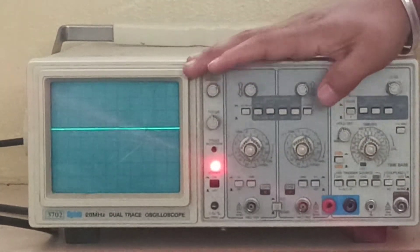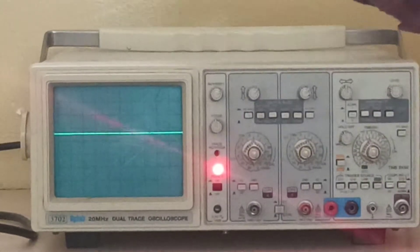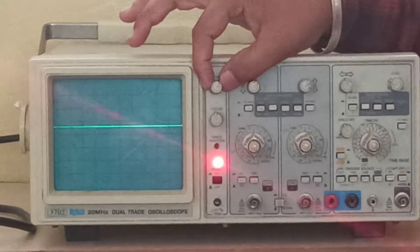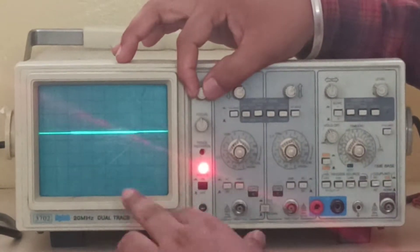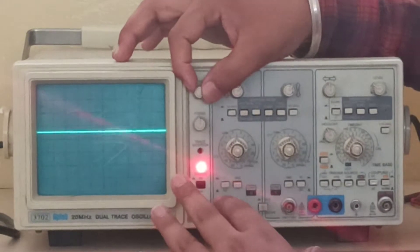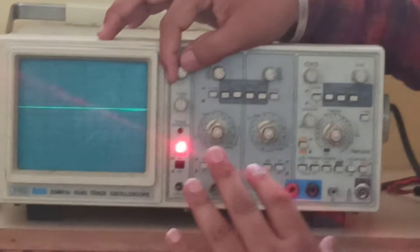Next, we will see some knobs. First knob means intensity. Intensity means brightness. You have to use the signal brightness at the right level.